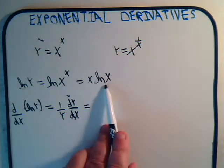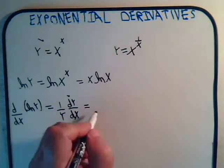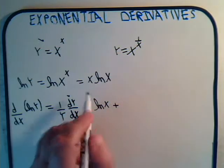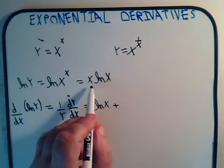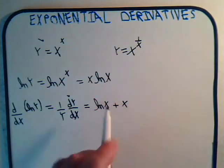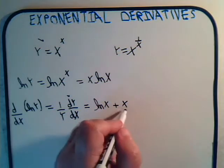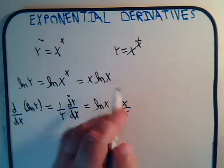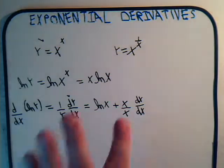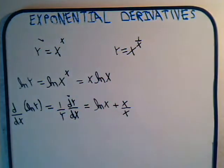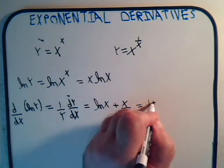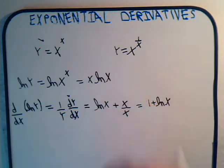The right-hand side equals this term times the derivative of the other, which is 1, giving us the natural log of x, plus the other term, x, times the derivative of the natural log of x, which is 1 over x. Of course dx/dx is just 1, so this simplifies to 1 plus the natural log of x.